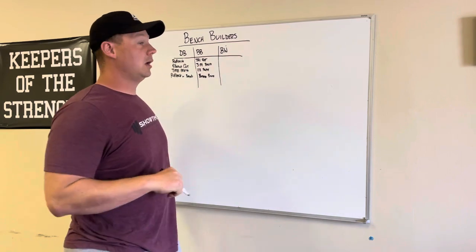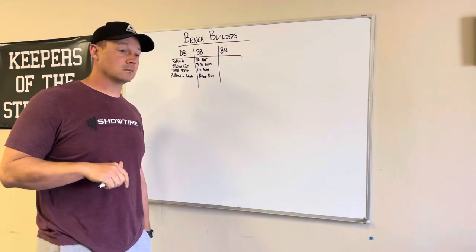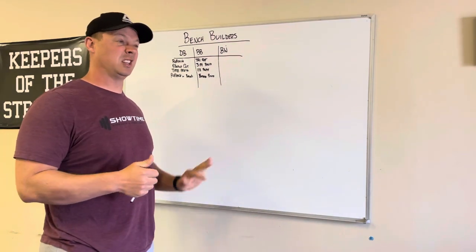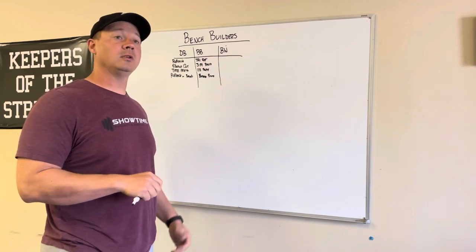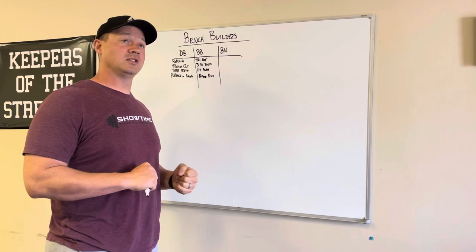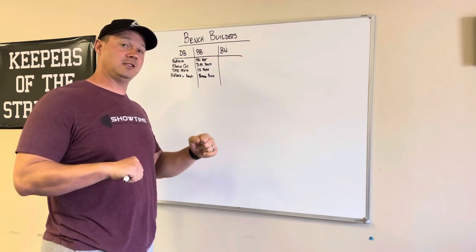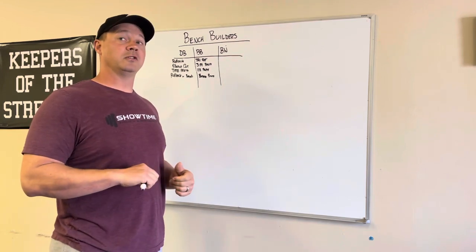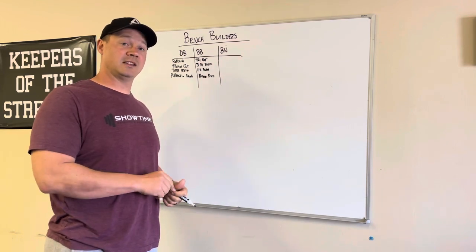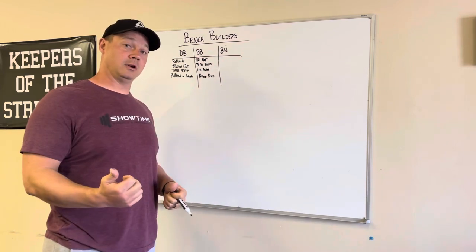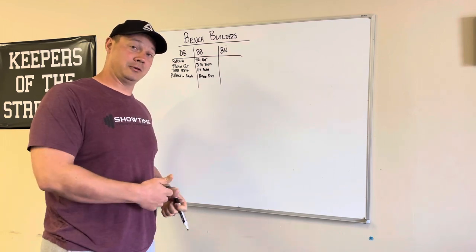Board press. Board press, I love being in the, probably in the 5 to 10 range, sometimes working up to a heavy triple. And the great thing about the boards is you can sort of find where your weak point is and work off that. So for me, my 3 board was higher or lower. I used my max on a 3 board was lower than a 2 board, which was lower than my 1 board.